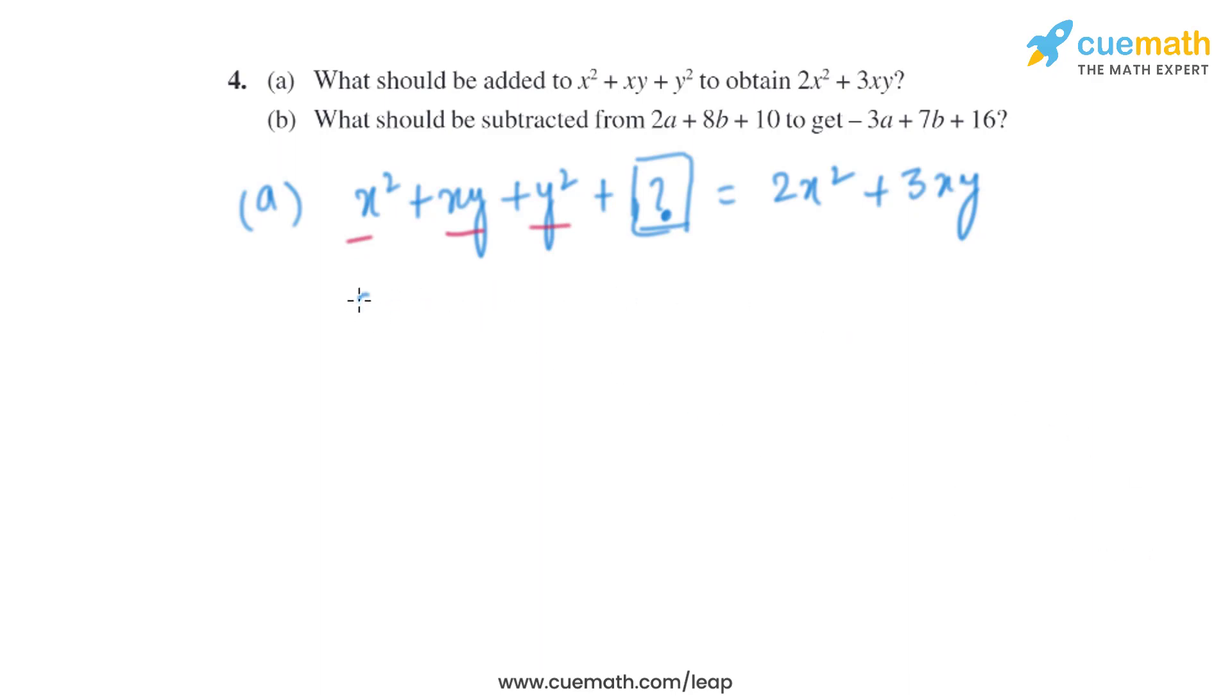So when we will use the transpose of these terms it will become 2x² + 3xy, and x² when we transpose it will become -x², and +xy will become -xy. Similarly it will become -y². Now we just have to add and subtract the like terms.